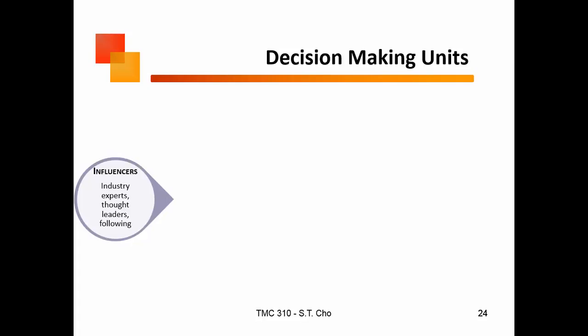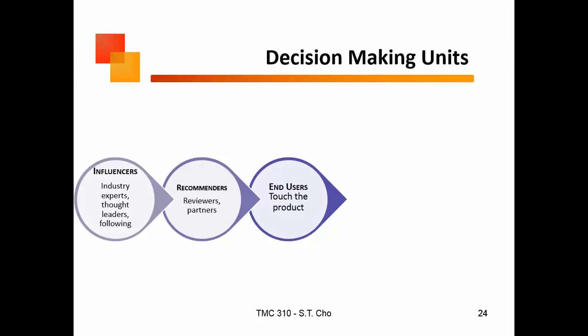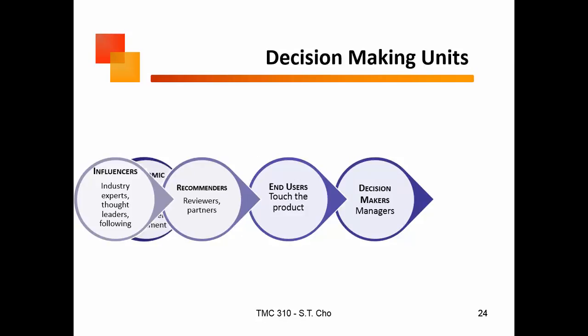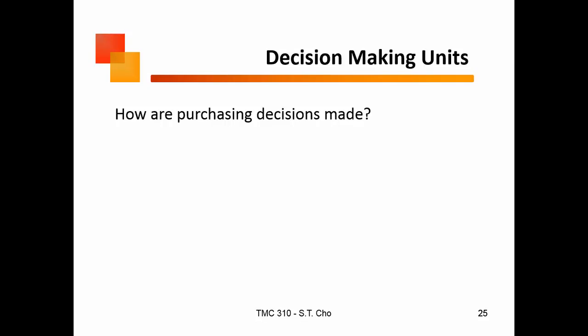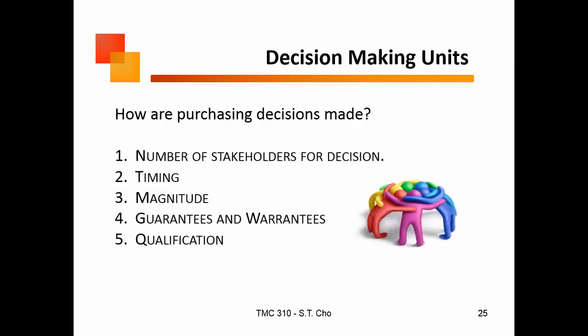In terms of working with large organizations and decision-making units, I'm interested in influencers and recommenders. Who are the end users — the ones who actually touch the product? They may not be the decision makers. Who is the economic buyer? Within an organization, it's normally a materials manager or purchasing department that can ultimately sign checks. I want to know how purchasing decisions are made: what are the factors and attributes, how many people make decisions, is there timing, and do they have to qualify my product by testing and sampling?